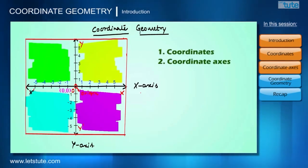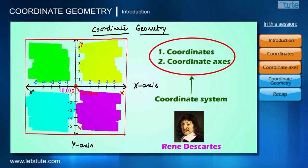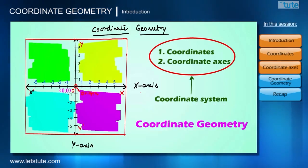Now we know what are coordinates and what are coordinate axes. This whole system is called the coordinate system. This system is given by the great French mathematician René Descartes, and therefore this coordinate system is named after him as Cartesian coordinate system. When concepts of this coordinate system are used in geometry, it is called coordinate geometry.